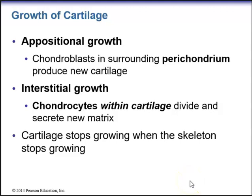Cartilage grows by two mechanisms. Appositional growth occurs when chondroblasts in the surrounding perichondrium produce new cartilage. Interstitial growth occurs when chondrocytes within the cartilage divide and secrete new matrix. Cartilage stops growing when the adult skeleton stops growing.